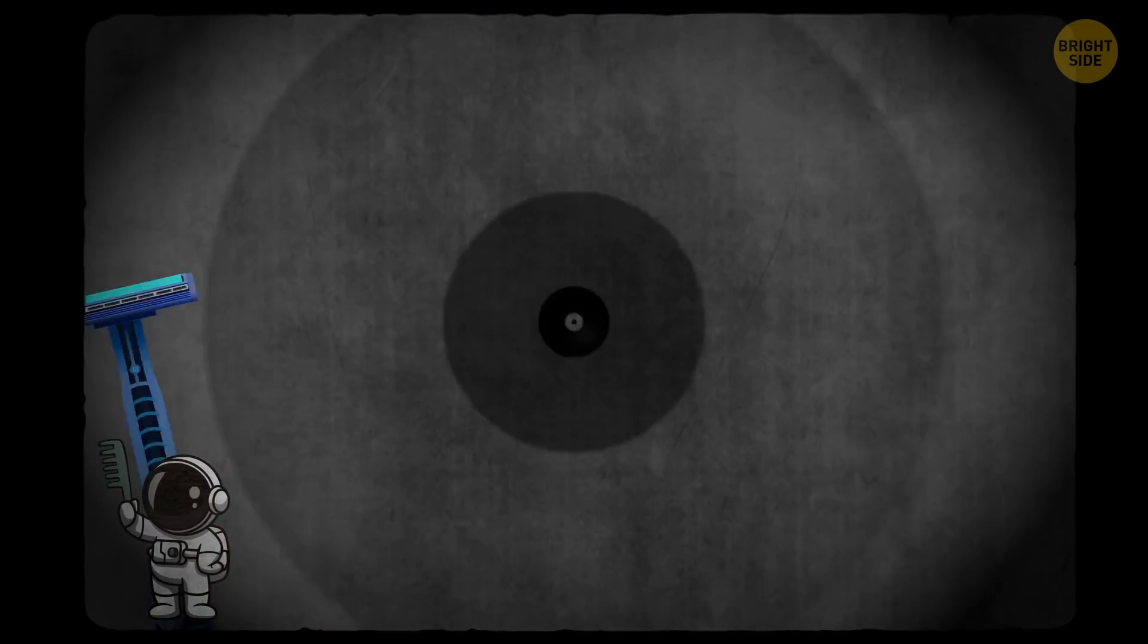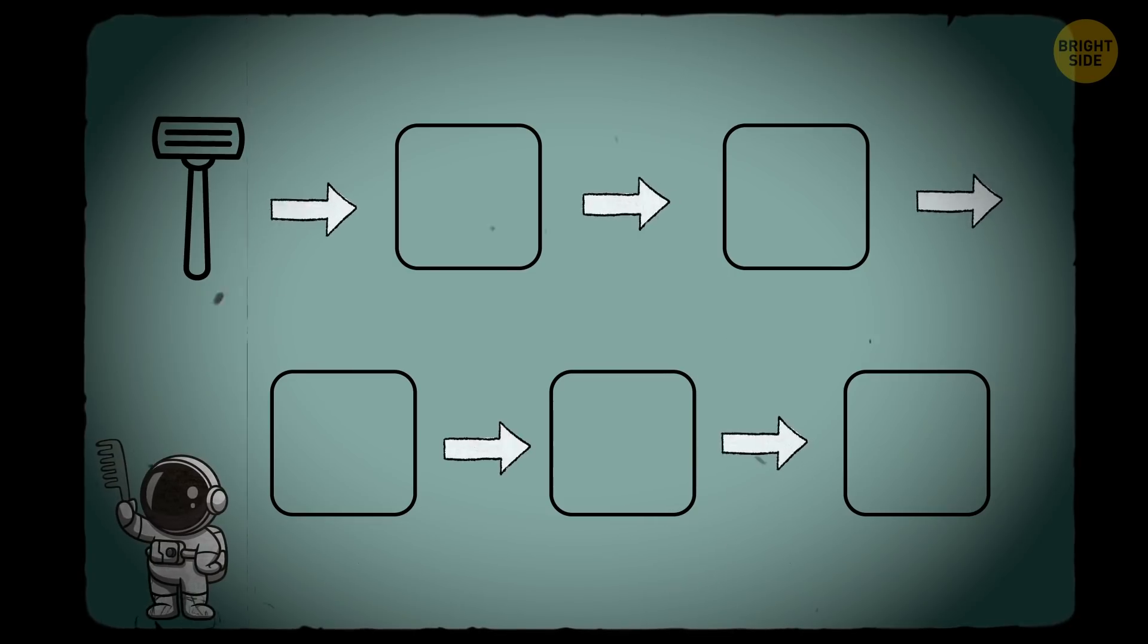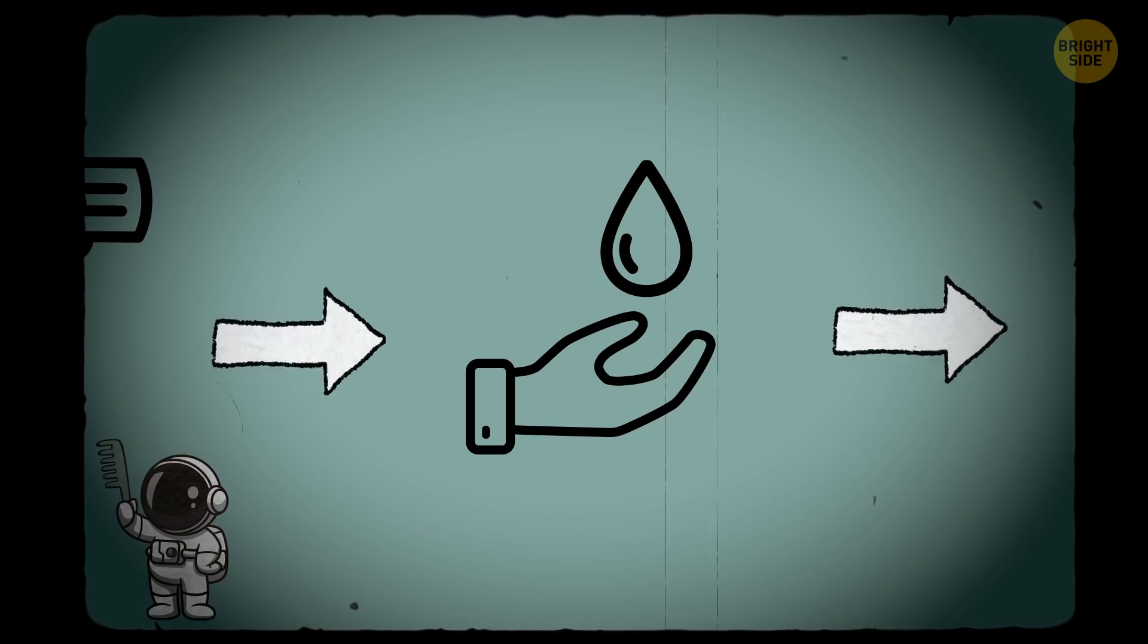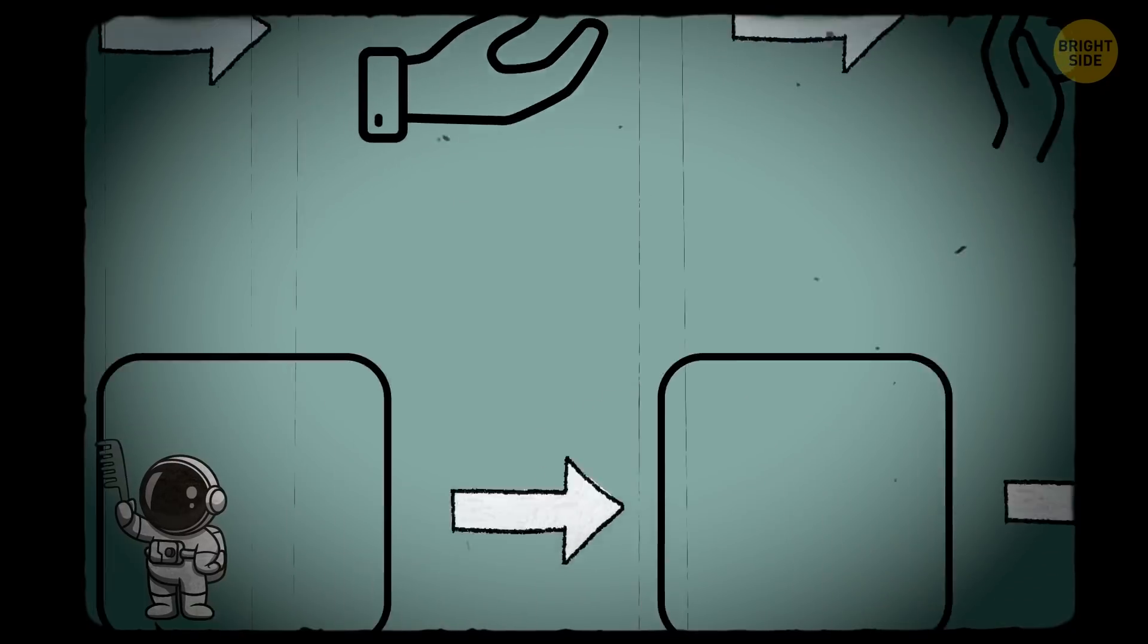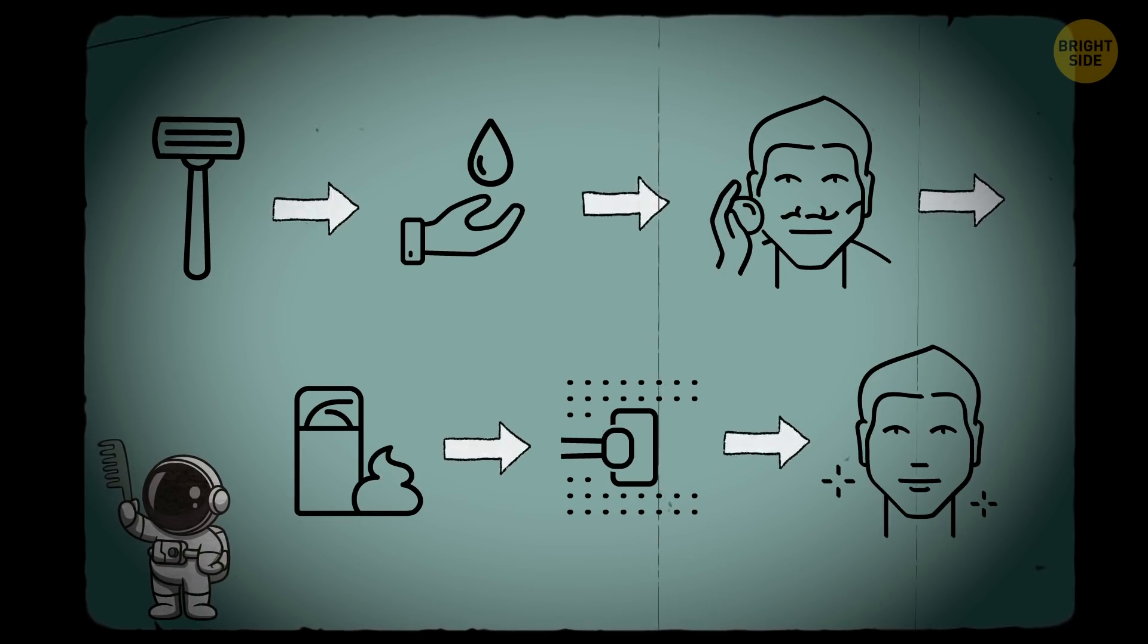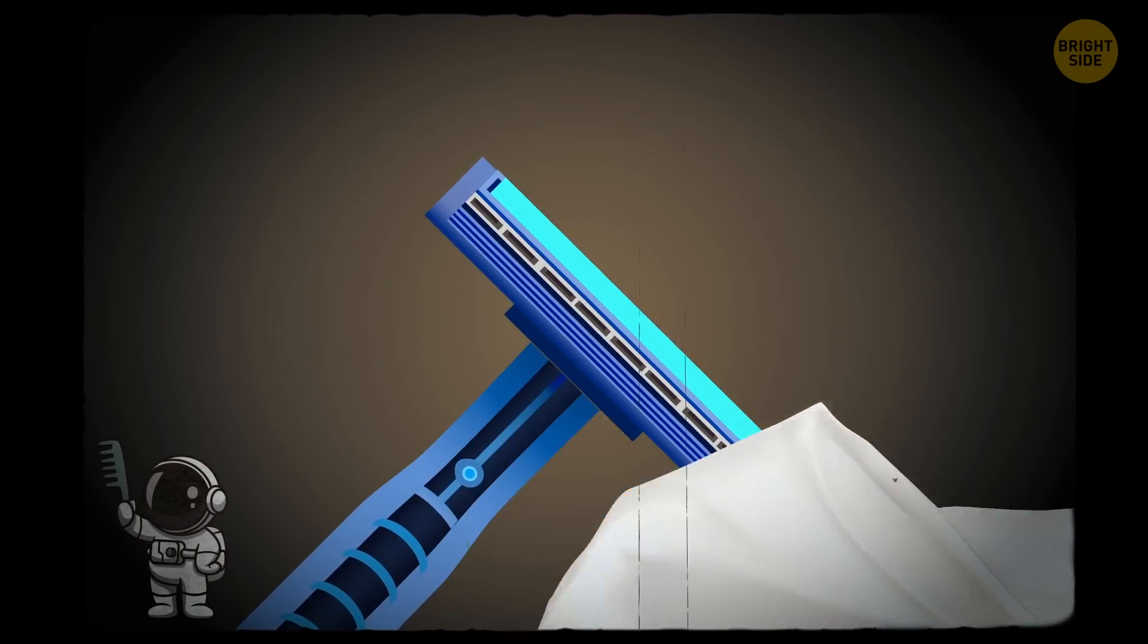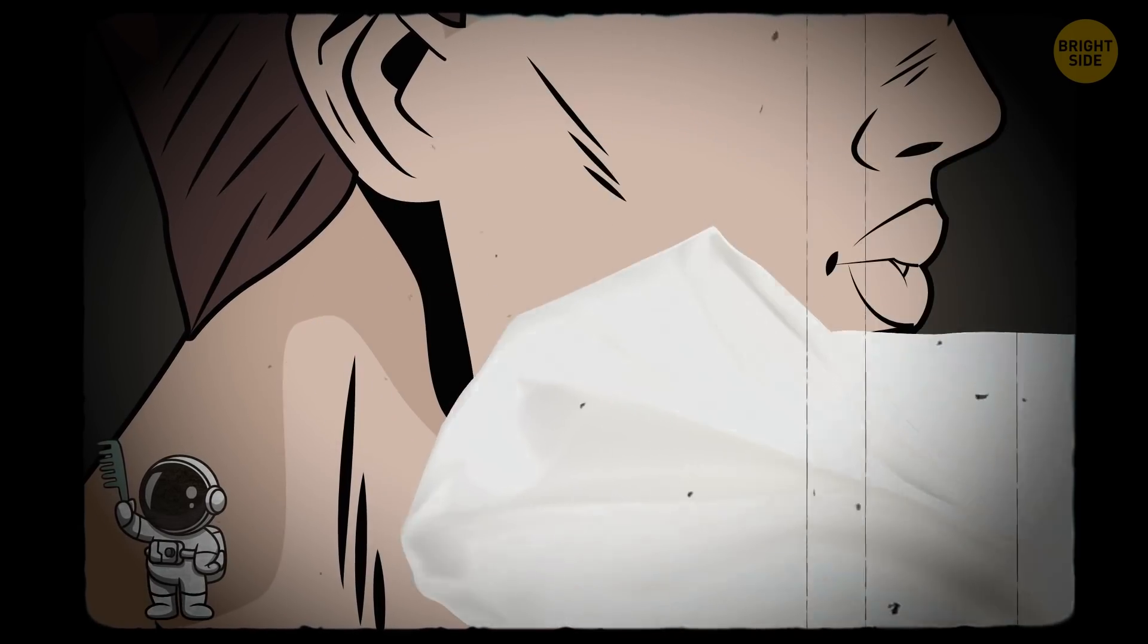Astronauts can use either a disposable razor or an electric one. If they use disposable razors, they first need to wet the skin. They squeeze a water bubble, catch it, and spread it all over their faces. The next step isn't much different from what they can do on Earth. You just need to apply some shaving cream. Then the shaving starts as normal. To get rid of hairs from the blade, they just clean it with a small bubble of water and a dry towel. They squeeze one more water bubble to wipe their face, and voila! They're clean-shaven now.